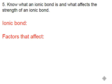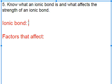Number five, know what an ionic bond is and what affects the strength of an ionic bond. So an ionic bond is just one kind of chemical bond.